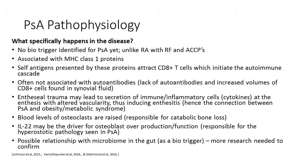What we do know is that HLA-B27 is associated with major histocompatibility complex class 1 proteins, and the involvement of those proteins on cell surfaces with the adaptive immune system. Cell antigens presented by these MHC class 1 proteins attract CD8 T cells, which initiate the autoimmune cascade. CD8+ T cells are a type of lymphocyte involved in immune response. This condition is often not associated with autoantibodies; instead there is an increased volume of T cells found in synovial fluid, which is the large driver of this condition.